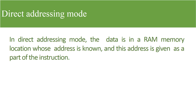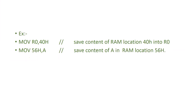The next is Direct Addressing Mode. In this mode, the operand is a RAM address — a memory location. This instruction requires the actual RAM address. For example, the instruction 'MOV 40H' — 40H is a direct RAM address, not an immediate value with a hash symbol.